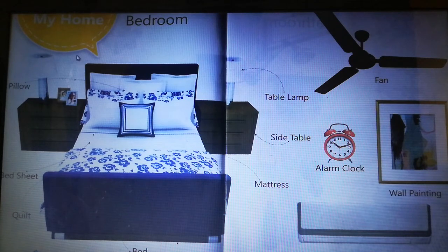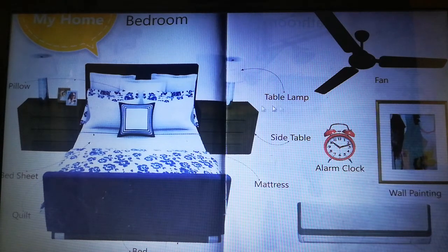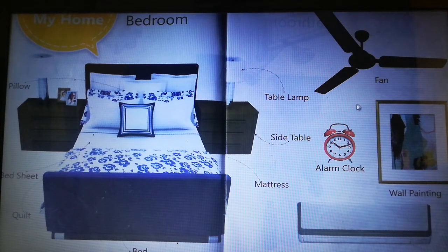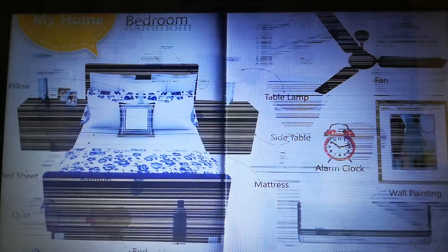Next, bedroom: pillow, bed sheet, quilt, bed, table lamp, side table, fan, alarm clock, wall painting, mattress, air conditioner. These are in the bedroom.